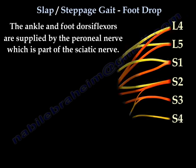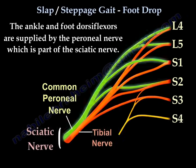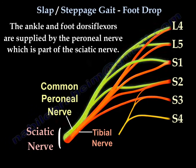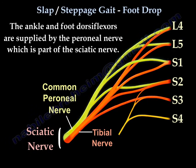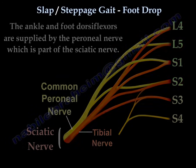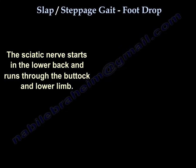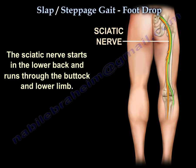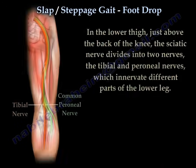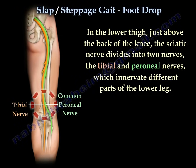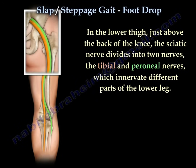The ankle and foot dorsiflexors are supplied by the peroneal nerve, which is part of the sciatic nerve. The sciatic nerve starts in the lower back and runs through the buttock and lower limb. In the lower thigh, just above the back of the knee, the sciatic nerve divides into two nerves — the tibial and peroneal nerves — which innervate different parts of the lower leg.